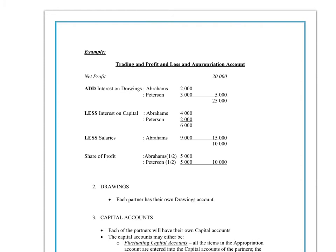In a partnership, you are going to draw up the income statement — the trading account, which tells you your gross profit, and the profit and loss account, which works out your net profit — in exactly the same way as you would for a sole trader. There is no difference. But you are going to add to your income statement an extra part known as an appropriation account. An appropriation simply means a division.